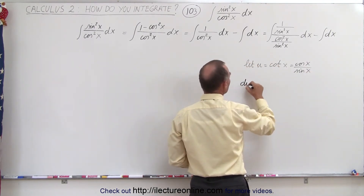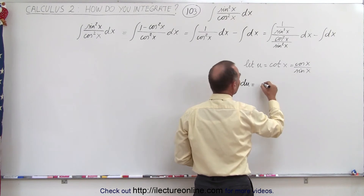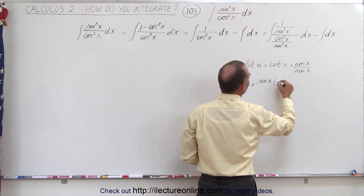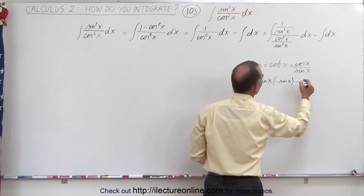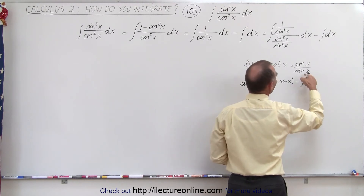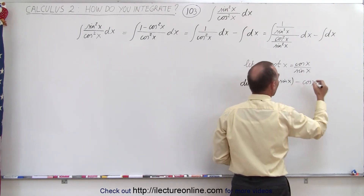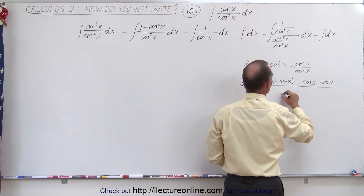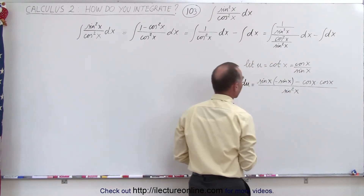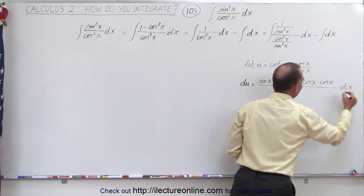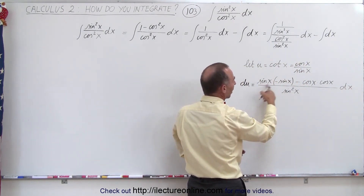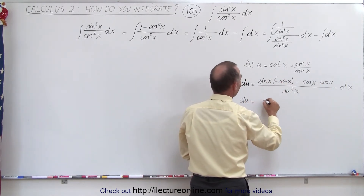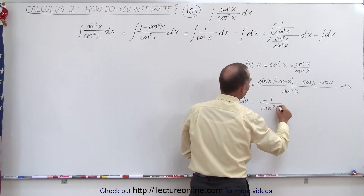When we look for du, we differentiate the cotangent using the quotient rule: the denominator sine of x times the derivative of the numerator, which is negative sine of x, minus the cosine of x times the derivative of the denominator, which is cosine of x, all divided by the denominator squared, sine square of x, times dx. If we pull out a negative one, we have sine square of x plus cosine square of x, so du equals negative 1 over sine square of x dx.